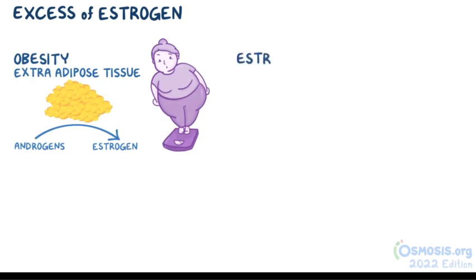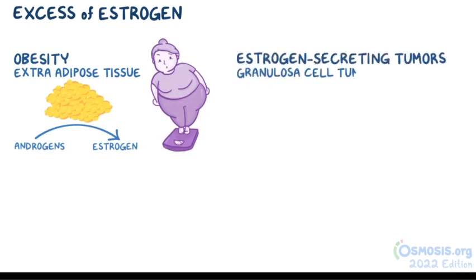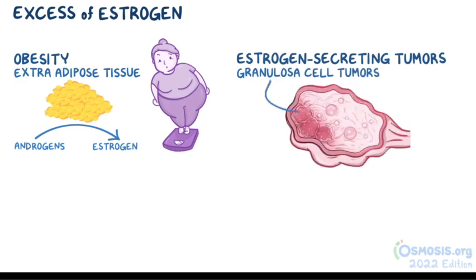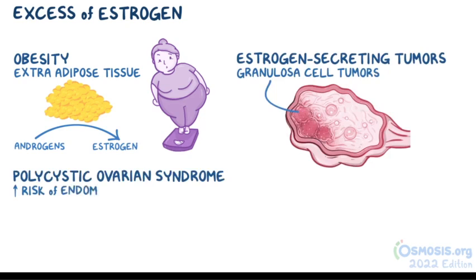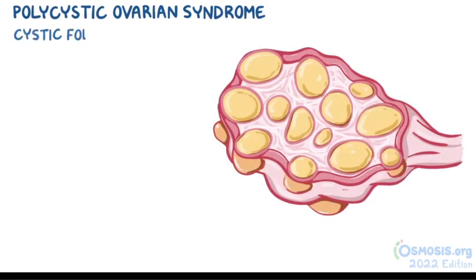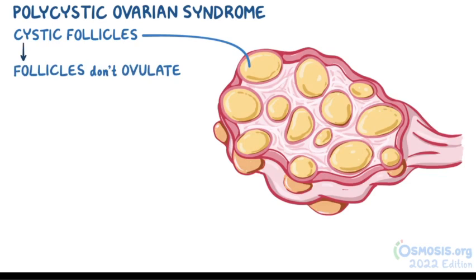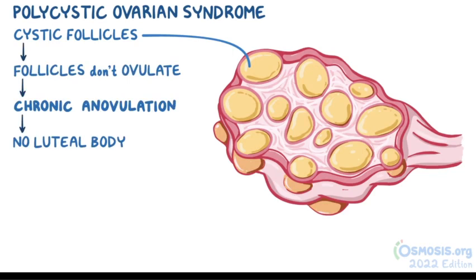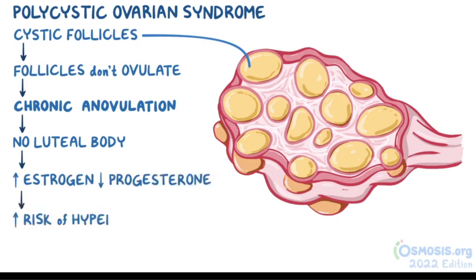Excess estrogen can also be caused by estrogen-secreting tumors such as granulosa cell tumors of the ovaries. People with polycystic ovarian syndrome are also at risk. In this condition, the ovary is full of cystic follicles that secrete estrogen, and these follicles don't ovulate — a condition known as chronic anovulation — so there's no luteal body to secrete progesterone, causing both high estrogen and low progesterone.